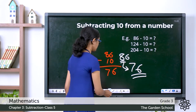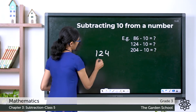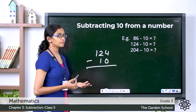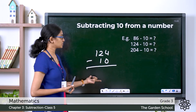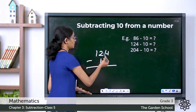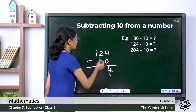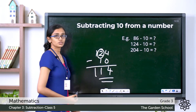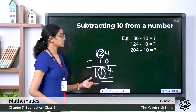Let's see the second example: 124 minus 10. From the previous example, we know only the digit in the tens place will change when you subtract 10 from a number. So let's follow that rule and write the answer. The tens digit is 2, and it is changed to 1. The tens digit changed. In both these examples, 86 and 124, the tens digit was greater than 1, so you don't have to regroup.